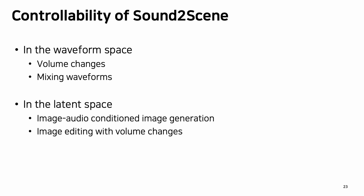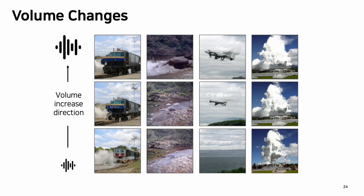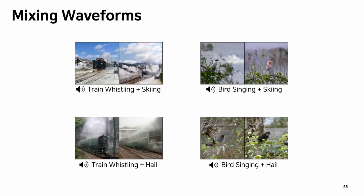This opens up interesting experiments. First is varying the volume of the same audio input — by changing the volume of a train sound, the size of the train changes in the generated images. Similarly, the flow of water is depicted differently with varying volumes. The second case is mixing waveforms: we combine two different waveforms into a single one and feed it to our model. The model synthesizes images reflecting multiple audio semantics — for example, a railroad or a bird pops up across a snowy scene when mixing with skiing sound, and a train and bird appear in a misty scene when mixing with hail sound.